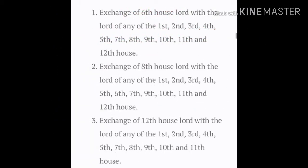This slide summarizes Dainya Parivartan Yoga. The exchange of the sixth lord with the lord of any other house — first through twelfth — or the exchange of the eighth house lord with the lord of any other house, or the exchange of the twelfth house lord with the lord of any auspicious house, all give Dainya Parivartan Yoga. In short, exchange of a Dushtasthana lord with an auspicious lord such as a Kendra lord or a Trikona lord will give you Dainya Parivartan Yoga.